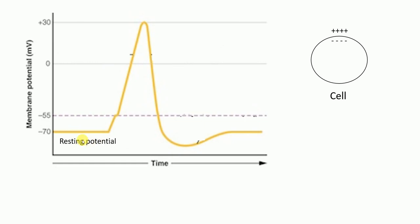In resting conditions, cells are slightly negative on the inside and slightly positive on the outside. This voltage is negative because we measure voltage from inside to outside using a voltmeter. At resting conditions for most nerve cells, the resting membrane potential is approximately minus 70 millivolts, though this may differ for other cell types.